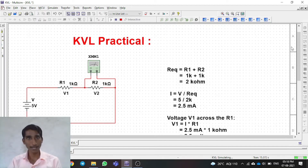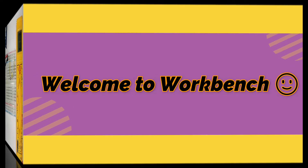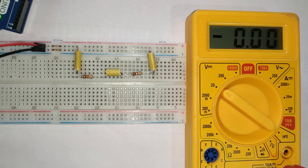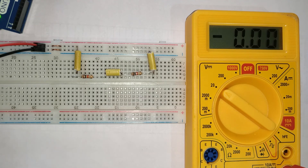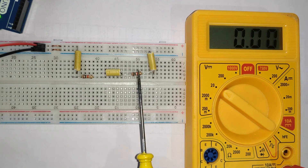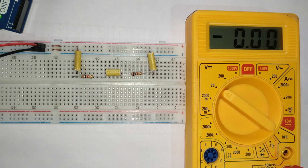We are done with simulation — now let's go to the practical workbench to build this circuit, measure the values, and see practically how they work. On the workbench we have set up two resistors in series, the same circuit we built in simulation. On a breadboard we have a 5-volt power supply, two resistors each of 1 kilo-ohm connected in series, and a multimeter set to voltage mode.